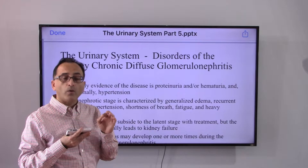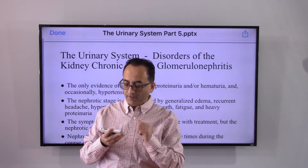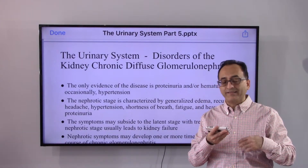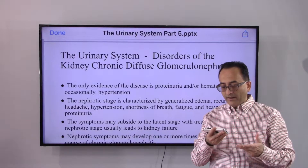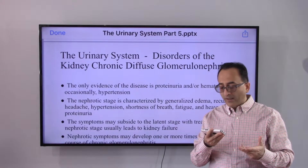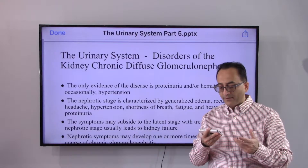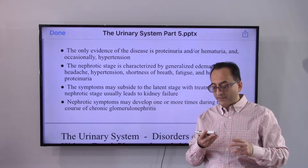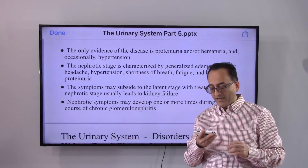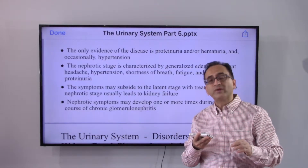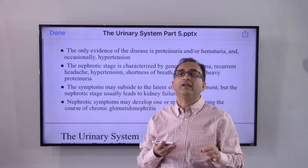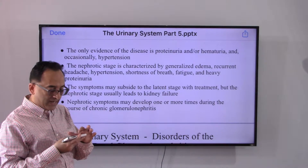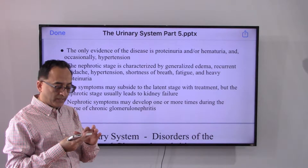The nephrotic stage is characterized by generalized edema, recurrent headache, elevated blood pressure, fatigue, shortness of breath, and sometimes heavy protein in the urine. Symptoms may subside back to the latent stage with treatment, but the nephrotic stage usually leads to kidney failure. Nephrotic symptoms may develop one or more times during the course of the chronic disease.